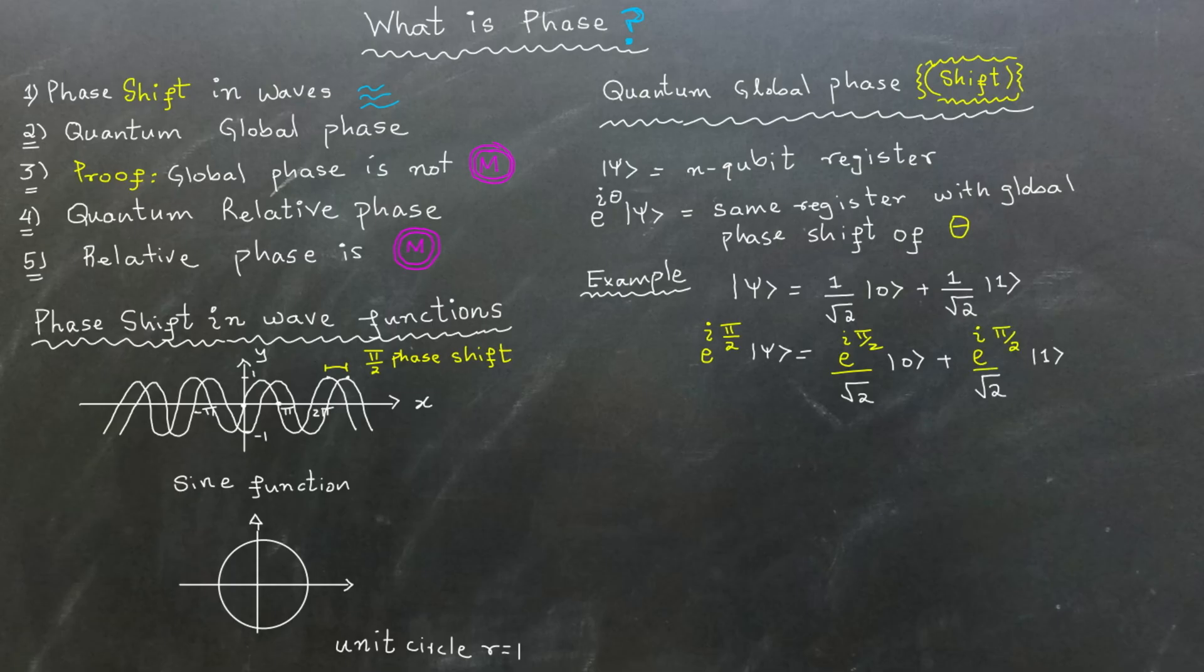Multiplying this entire register by Euler's number raised to the power i pi over 2 results in a global phase shift of pi over 2. Each point on the unit circle can be represented by Euler's number raised to the power i theta. When theta is 0, we are at 1. At theta equals pi over 2 radians, that is 90 degrees, we have i. At theta equals pi radians, that is 180 degrees, we have minus 1. And finally, when theta is 3 pi over 2, we have minus i.